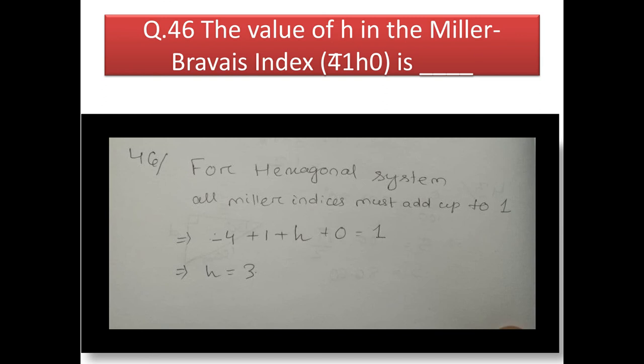Next question: the value of h in the Miller-Bravais indices (−4, 1, h, 0). For a hexagonal system, all four Miller-Bravais indices must sum such that h + k + i = 0. Bar 4 means −4; adding up gives the value of h = 3.